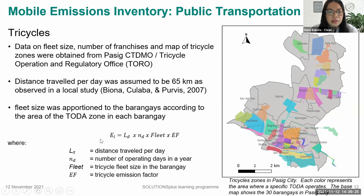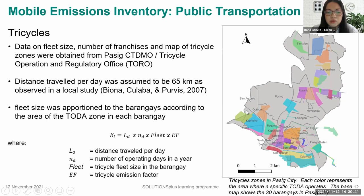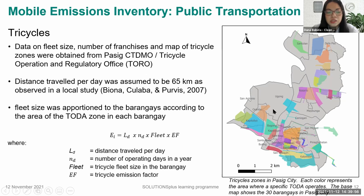The equation for tricycle emissions includes distance traveled per day, number of operating days in a year, tricycle fleet size in the barangay, and the tricycle emission factor. For each Toda, the fleet size was apportioned to the barangays according to the area of the Toda zone in each barangay. This was done by importing KML files of barangay delineation and tricycle zones in Google My Maps to manually determine the area of each Toda zone in each barangay.